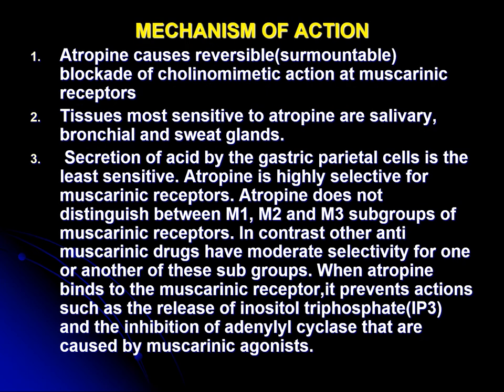As far as the mechanism of action is concerned, atropine and other congeners cause reversible, competitive, surmountable blockade of cholinomimetic action at muscarinic receptors. That means if you increase the amount of agonist, this blockade can be overcome. The most sensitive tissues are the salivary, bronchial, and sweat glands, while secretion of acid by gastric parietal cells is least sensitive. Atropine is highly selective for muscarinic receptors but does not distinguish between M1, M2, and M3 subgroups. In contrast, other anti-muscarinic drugs have moderate selectivity for one or another of these subgroups.